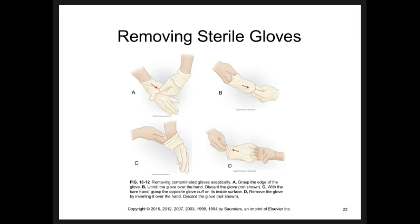When you remove your sterile gloves, take them off inside out. When you pull the first one off it'll be inside out — hold onto it with the hand that still has the sterile glove, then pull the second glove over the top of the first contaminated glove so they're together and both turn inside out. That way anything contaminated is contained on the inside of the gloves. It makes a lot of sense when you're trying to keep your microbes and germs contained.